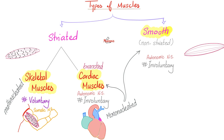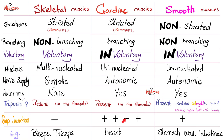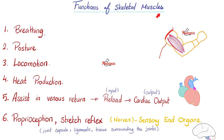Types of muscles: you have skeletal, cardiac, and smooth, and a table to compare among them. Skeletal muscles are not just for motion — they are also for posture, breathing, heat production, etc.